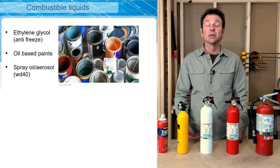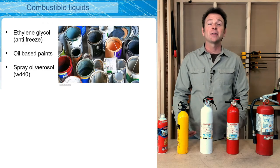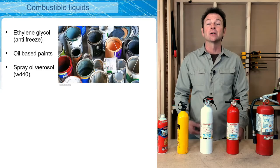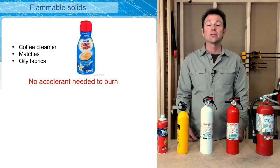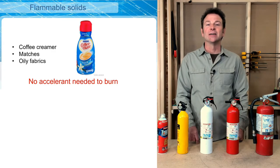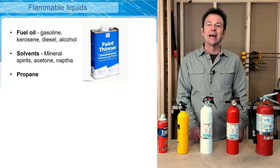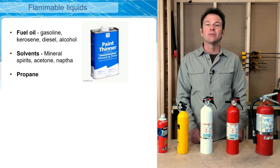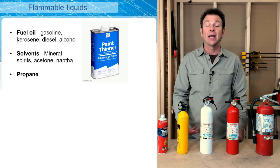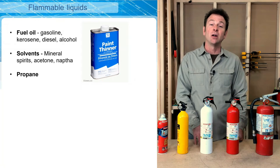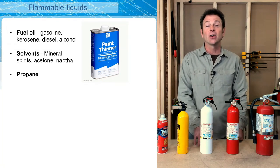Combustible liquids include paint, which is notorious for being flammable, antifreeze from vehicles, and any sprays or aerosols. A common example of a flammable solid is coffee creamer, which will ignite very quickly. Flammable liquids include gasoline, diesel, kerosene, alcohol-based products, and solvents like mineral spirits, acetone, and naphtha — all very common especially in finishing stages. Even propane is considered a flammable liquid. All of these are hazardous and can very quickly create a fire.